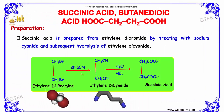Succinic acid is prepared from ethylene dibromide by treating it with two moles of sodium cyanide and subsequent hydrolysis of ethylene dicyanide. When ethylene dibromide is reacted in the presence of sodium cyanide, we obtain an intermediate product, ethylene dicyanide. On hydrolysis in the presence of hydrochloric acid, we obtain succinic acid.